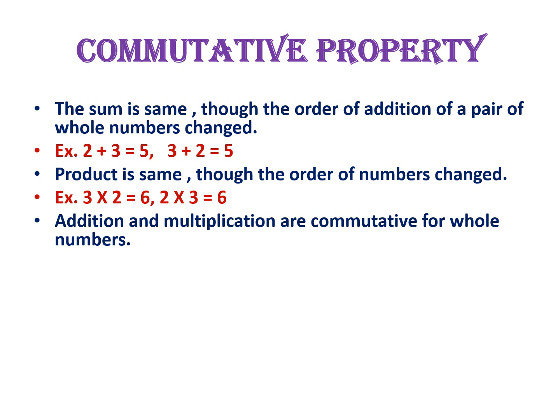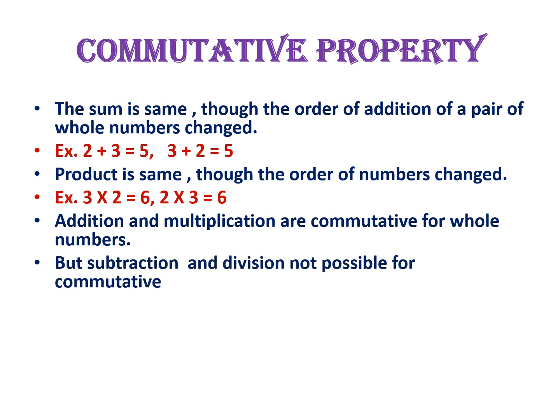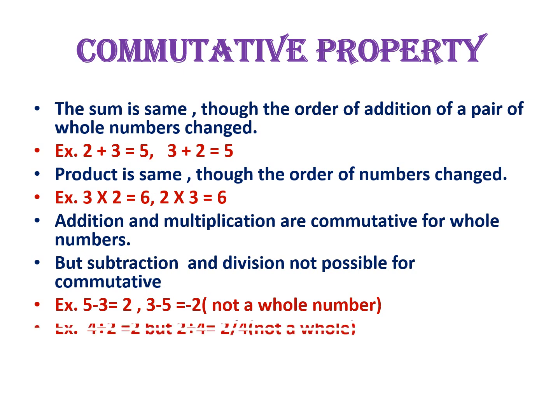But in subtraction and division, it is not possible because we won't get the same result. For example, 5 minus 3 is equal to 2, but 3 minus 5 is equal to minus 2. When we change the order, we get a negative number. So we can say that whole numbers are commutative under addition and multiplication only.